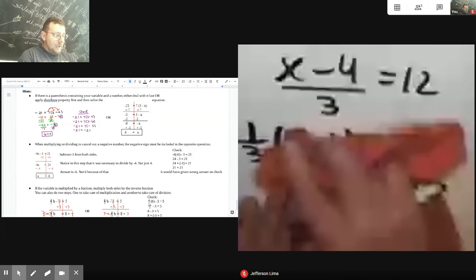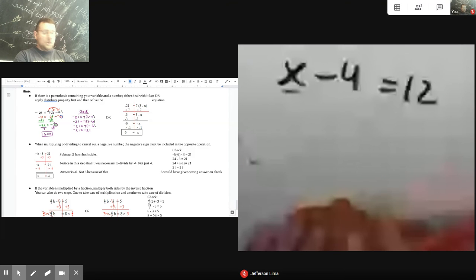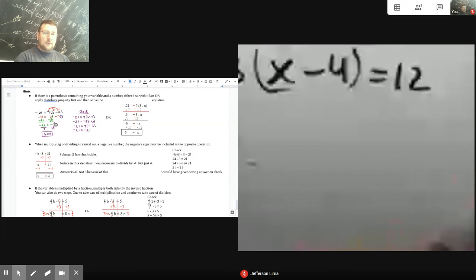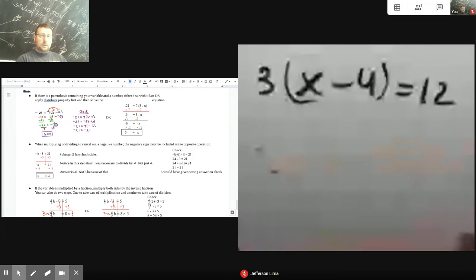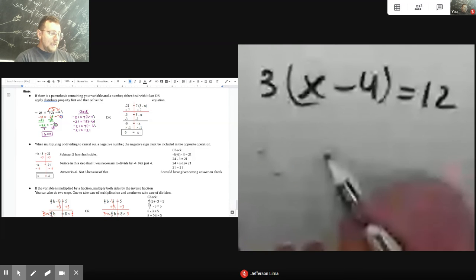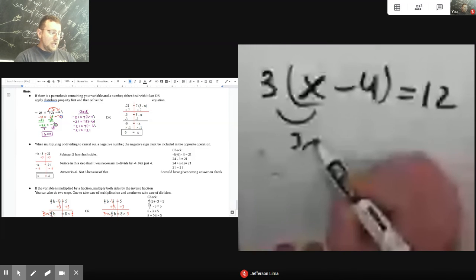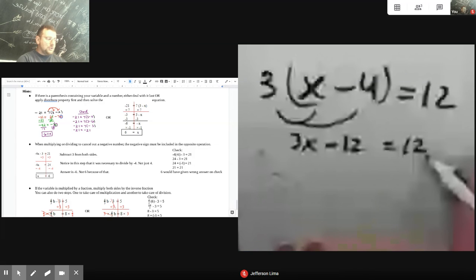But I want to show you though, a second way to solve the problem, the original one we just did, which is get rid of the parentheses by distributing. If you do that, you don't have a parentheses anymore. And then you solve it like you normally would. So three times x is 3x, and three times negative four is negative 12, equals 12. And now they have written like this, you can follow normal reverse order of operations.